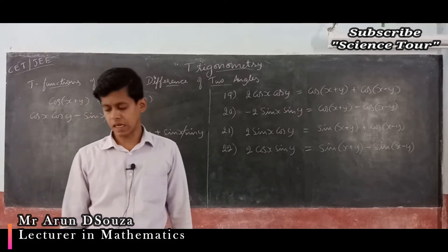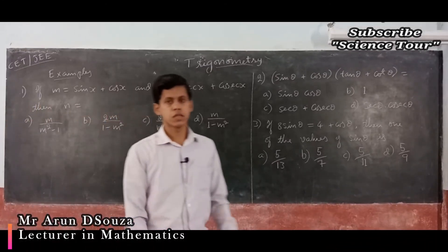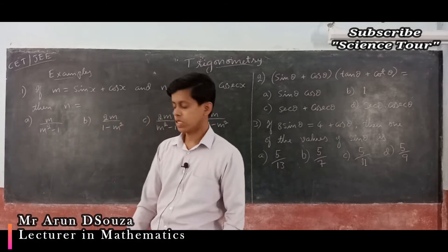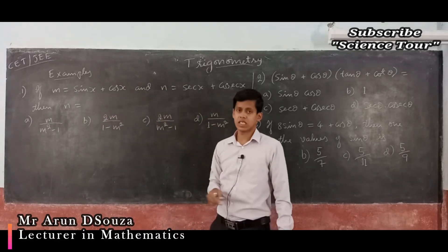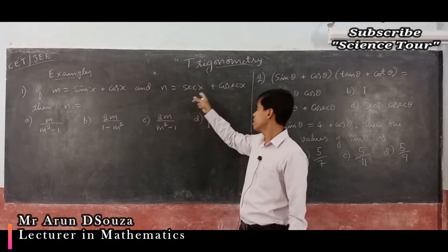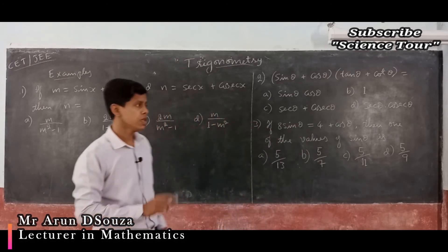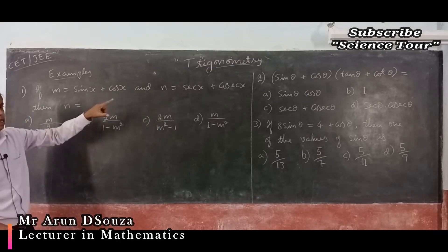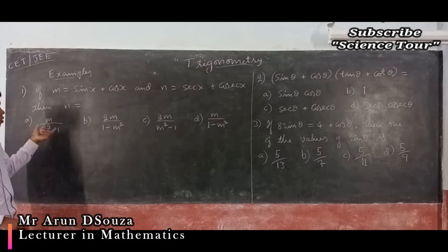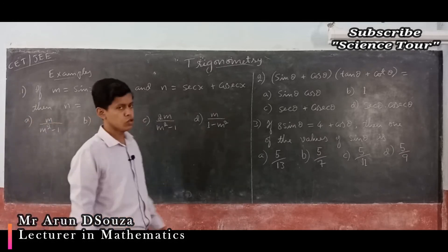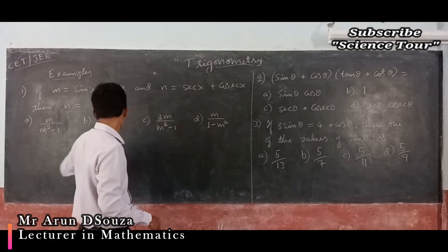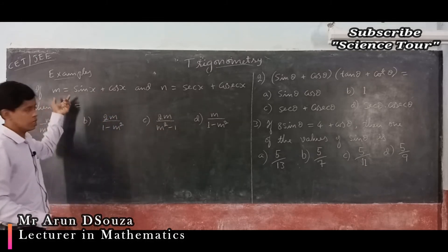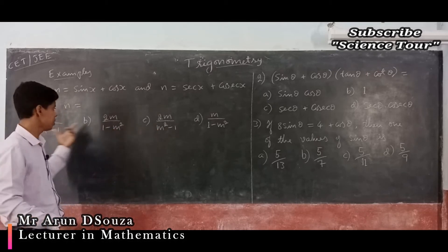Let us begin with examples. Example 1: If m = sin x + cos x and n = sec x + cosec x, then n can be expressed in terms of m. Looking at the options, the denominator is m² everywhere. So let us find m²: m² = (sin x + cos x)² = sin²x + cos²x + 2 sin x cos x = 1 + 2 sin x cos x. Therefore m² − 1 = 2 sin x cos x.